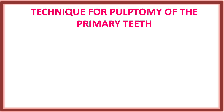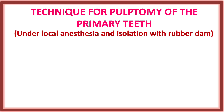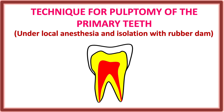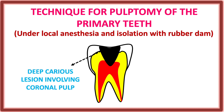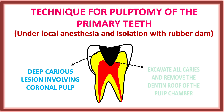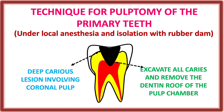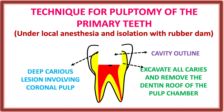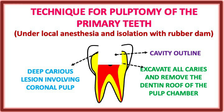The pulpotomy of primary teeth is performed under local anesthesia and isolated with rubber dam. Looking at the figure: a deep caries lesion involves the coronal pulp only. The first step is to excavate all caries and remove the dentine roof of the pulp chamber, giving a cavity outline.